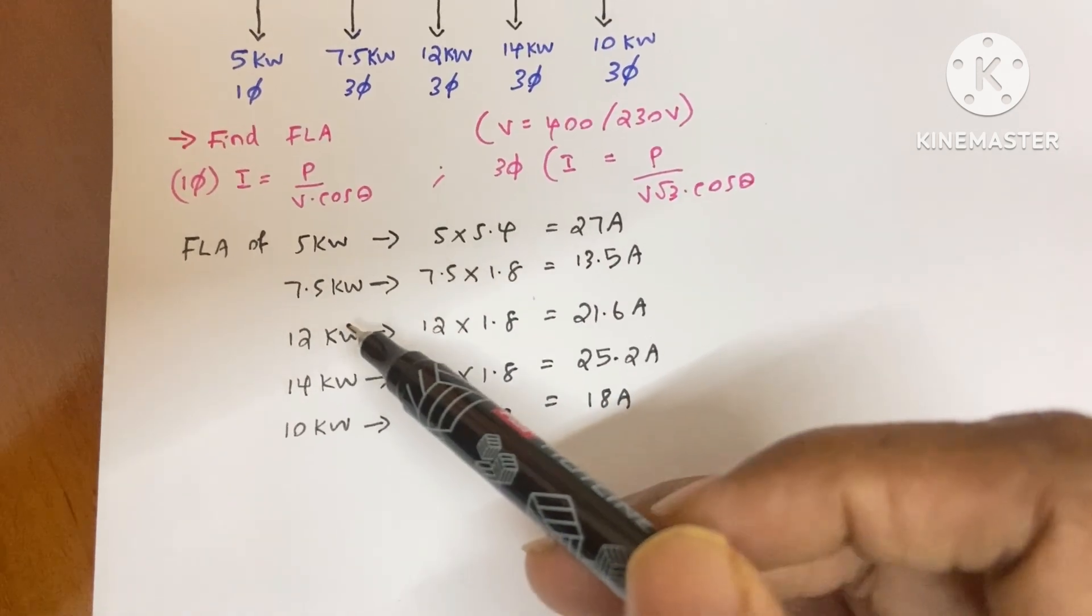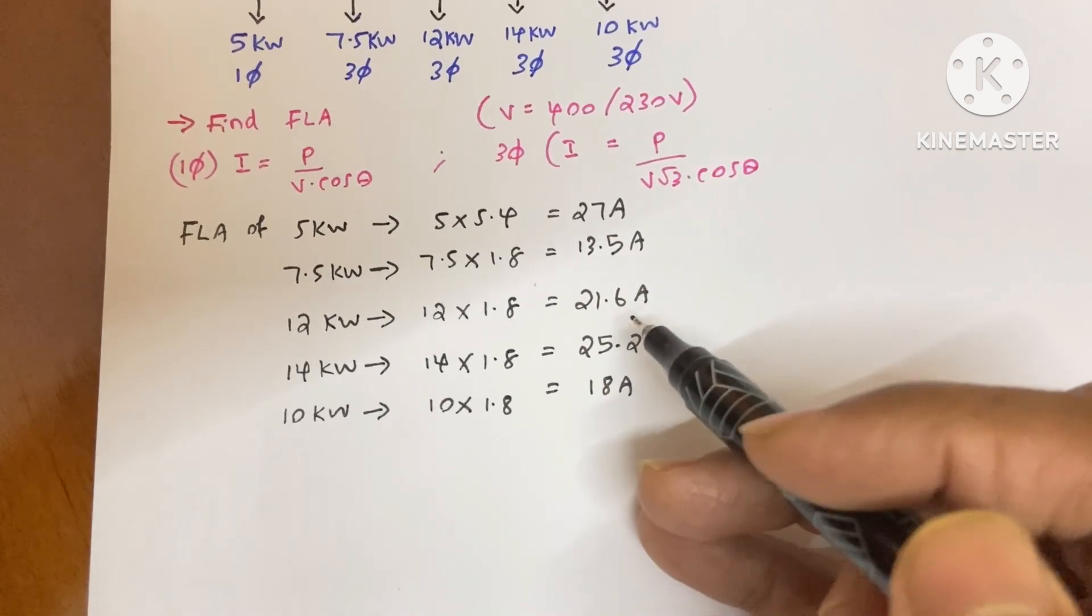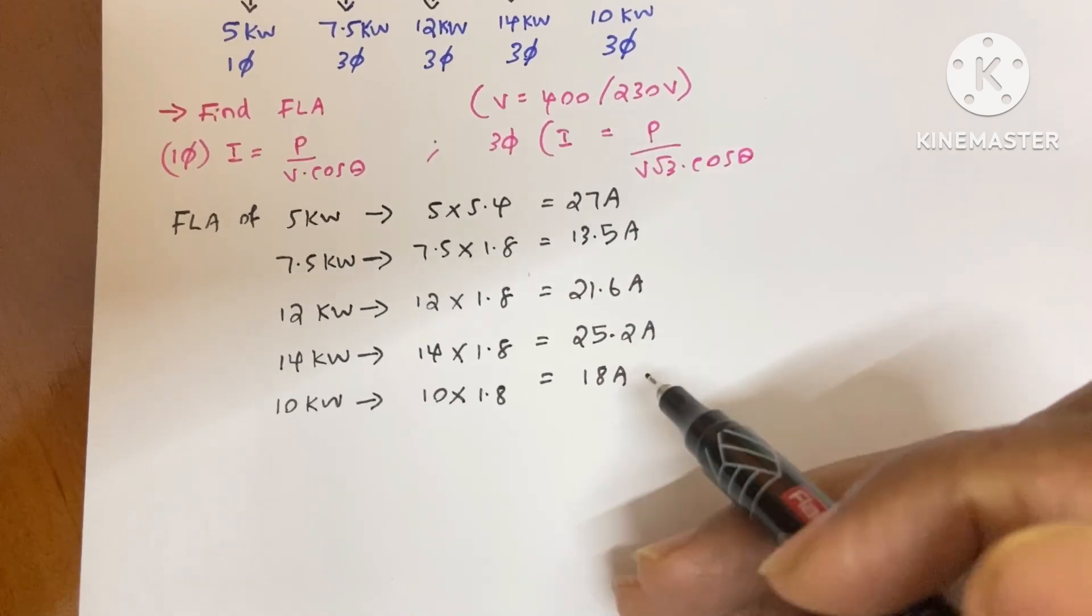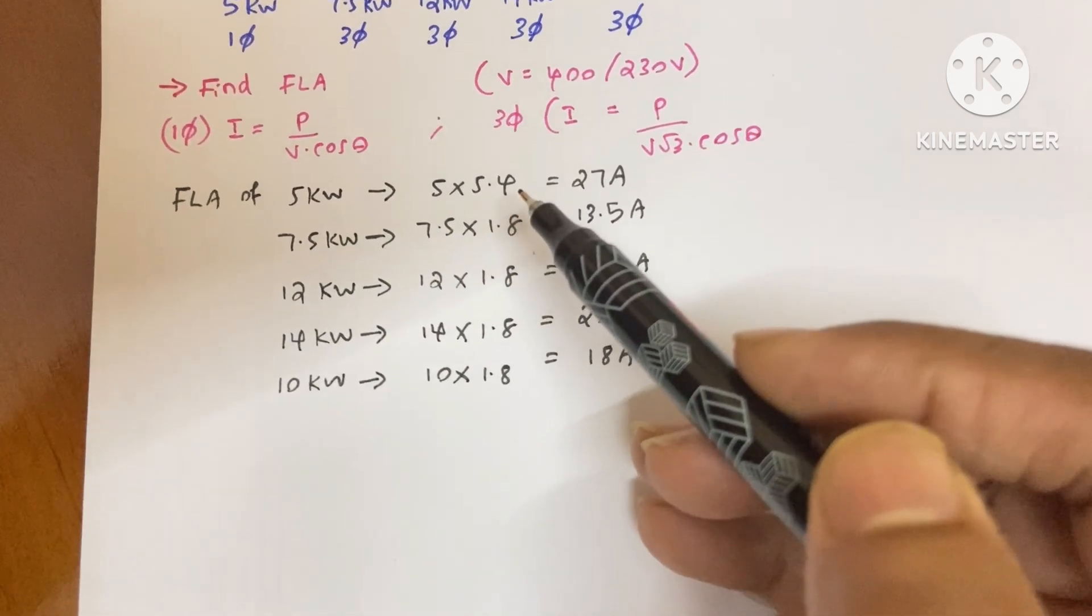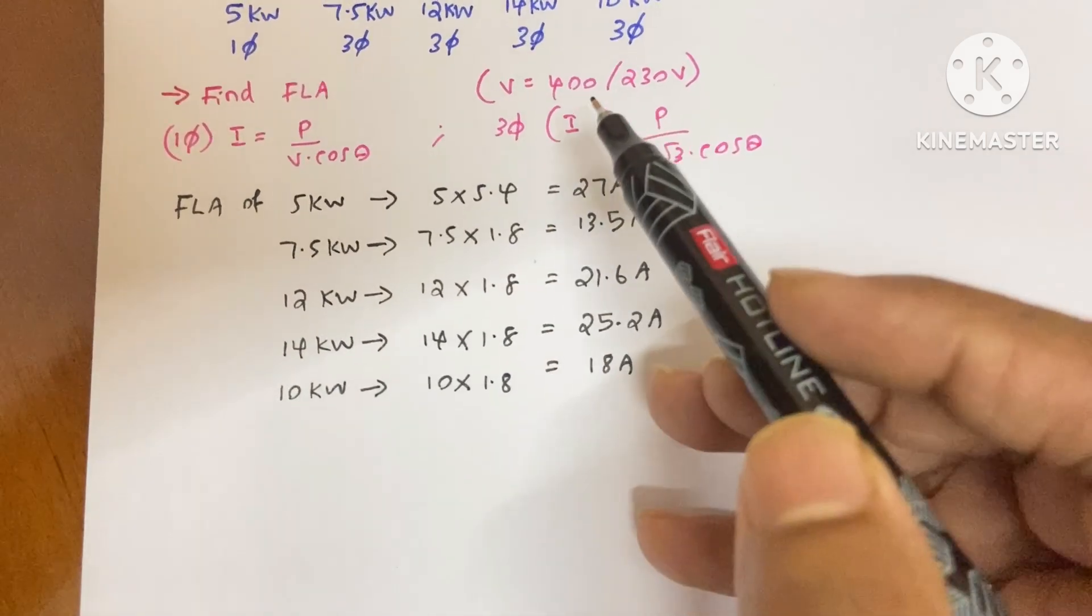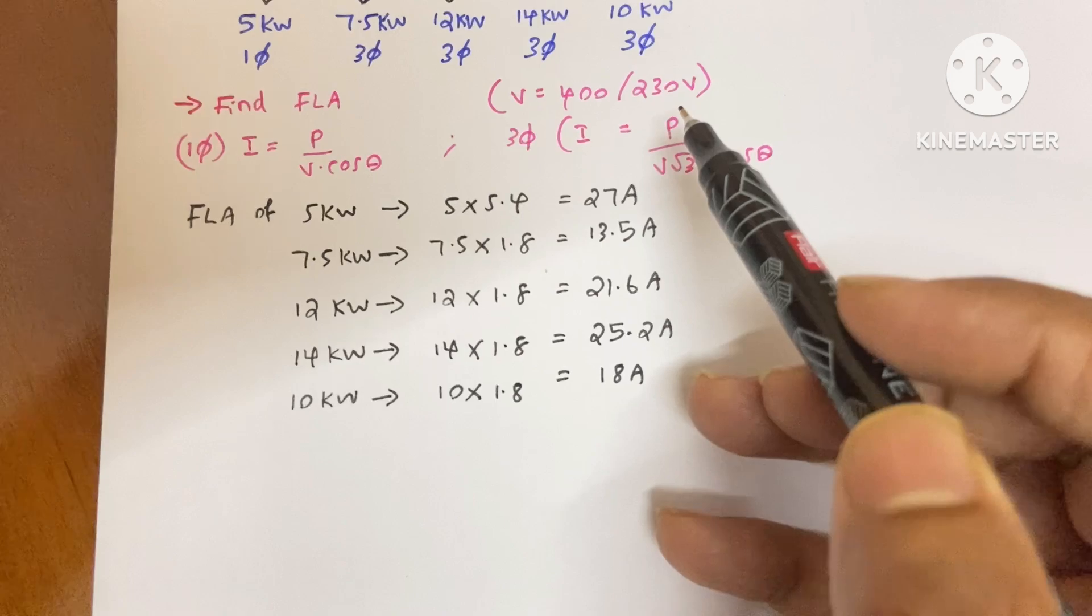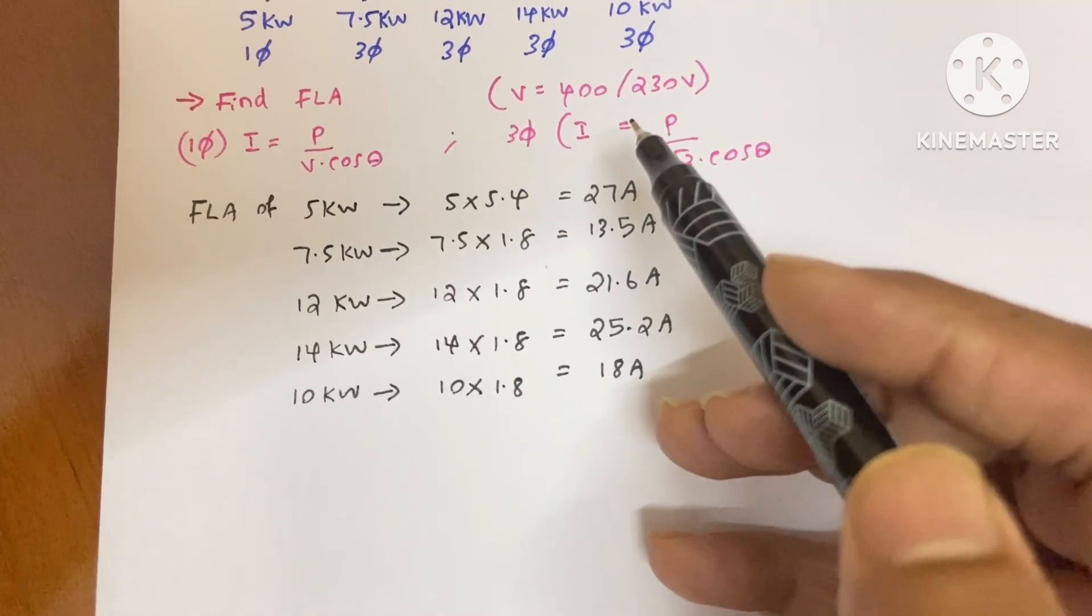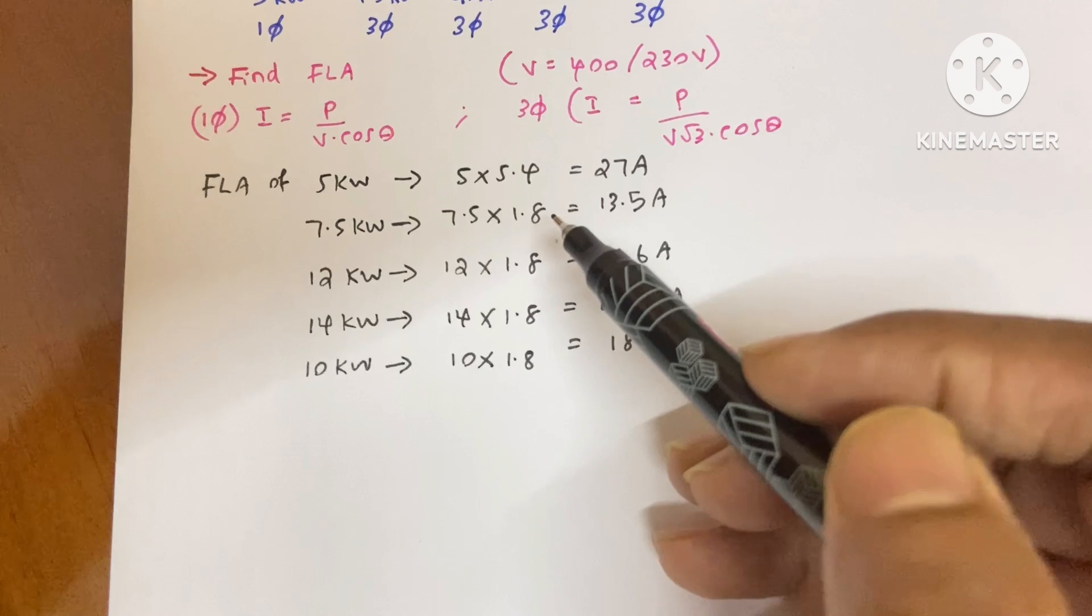Just like that, for all other motors we already got the full load ampere of these values. You can use these magic values of 5.4 and 1.8 if your voltage is 400 by 230 volt. I already made a video of how to find this 5.4 and 1.8, so if you visit my channel you will get that video.